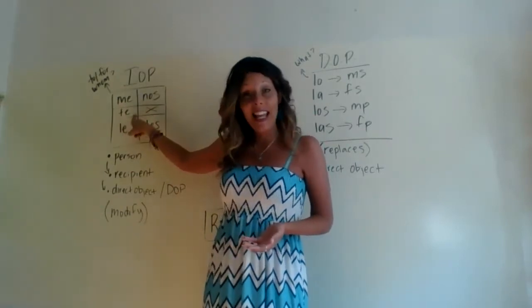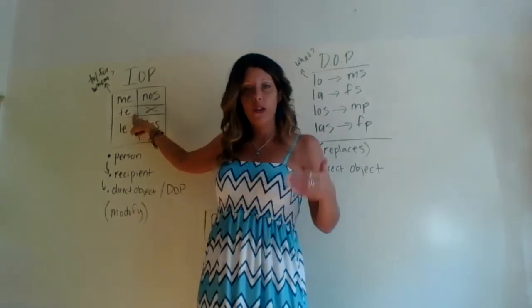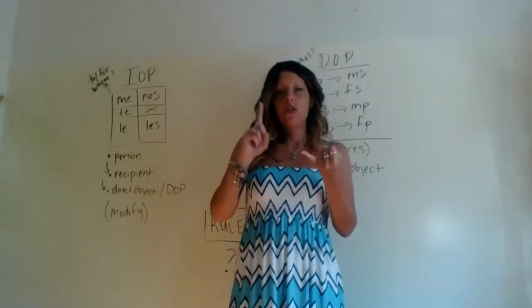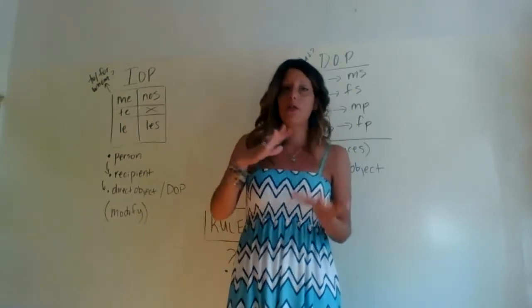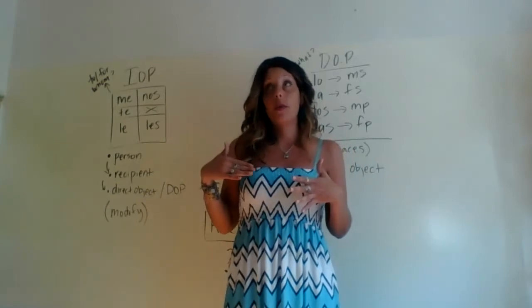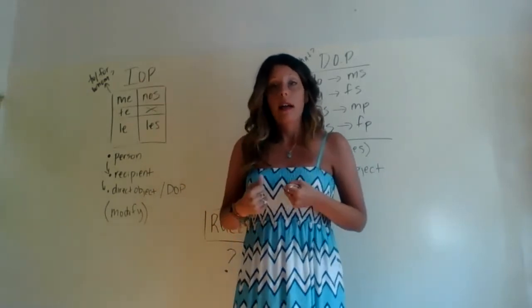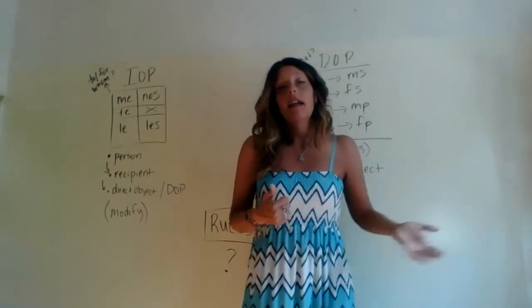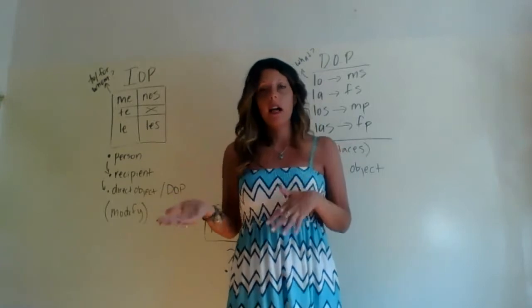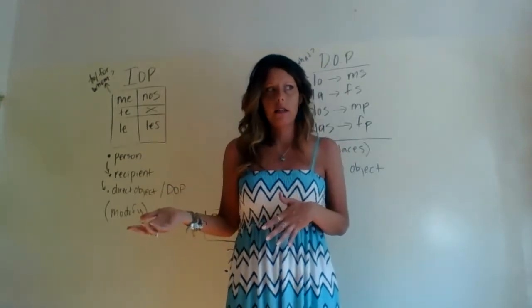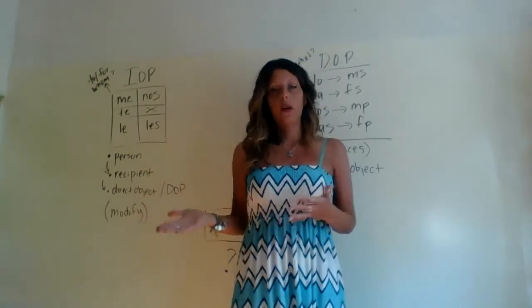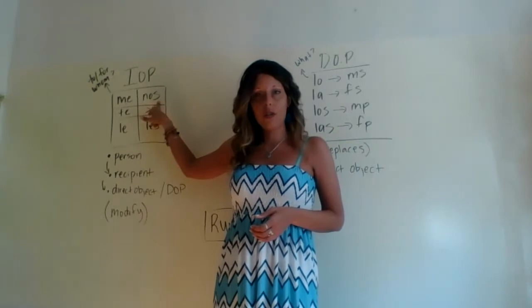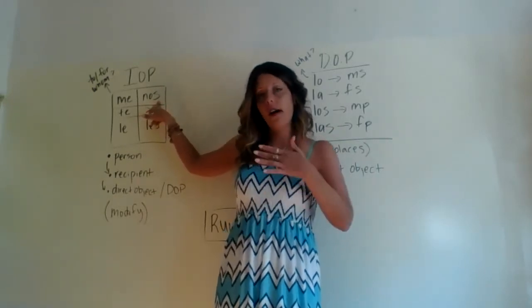You're going to see a pattern here. 'Te' can be 'to you' or 'for you.' 'Le' has a lot of different translations — it could be 'to him,' 'for him,' 'to her,' 'for her,' 'to usted,' 'for usted.' Even if we have somebody's name in there — like Roberto, Hector, Guadalupe, or Maria — it could be 'to Guadalupe,' 'to Maria,' 'to Hector,' or 'for' any of those people. 'Nos' would be 'to us' or 'for us.'